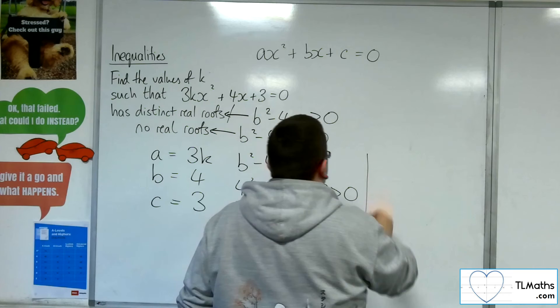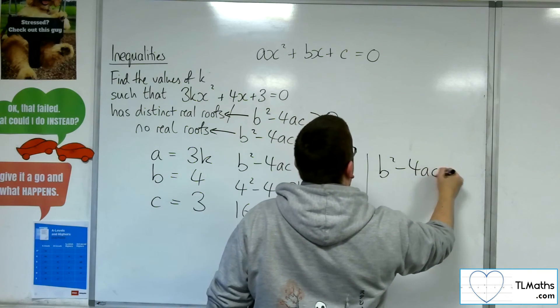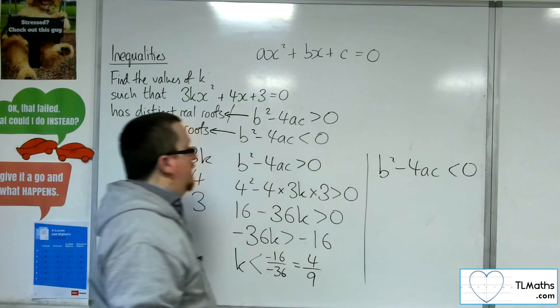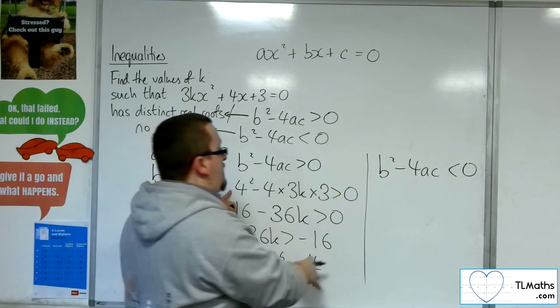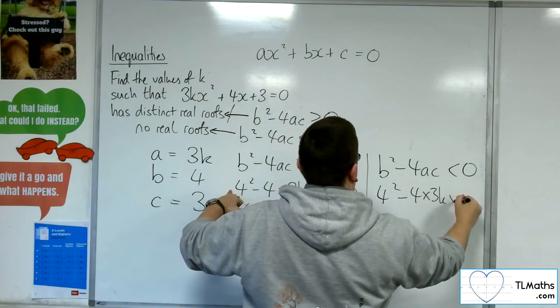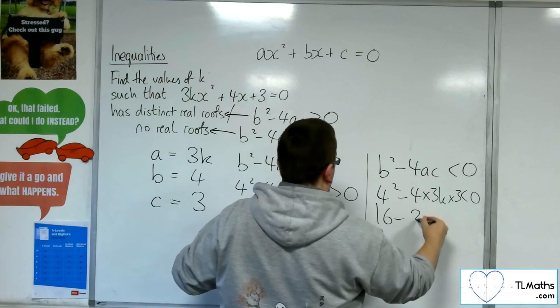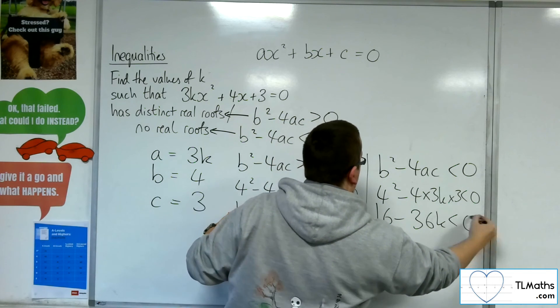If, on the other hand, I was looking at no real roots, then the b squared minus 4ac would have to have been negative, in which case, all of this is pretty much the same stuff. I still get the 16, take away 36k, but now that's less than 0.